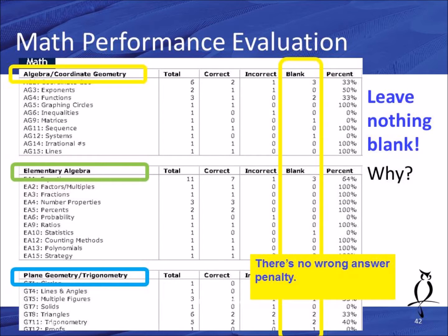On the left-hand side you can see the three major categories of questions always on the ACT: algebra/coordinate geometry, elementary algebra, and plane geometry and trig. Under algebra and coordinate geometry there's always exponents, functions, graphing circles, inequalities, and matrices. Under elementary algebra, equations are always present — the most important category. If you're not getting those 11 right, you've missed a big opportunity to raise your score. Under plane geometry and trig there's basic geometry like triangles and circles, plus sine, cosine, and tangent.